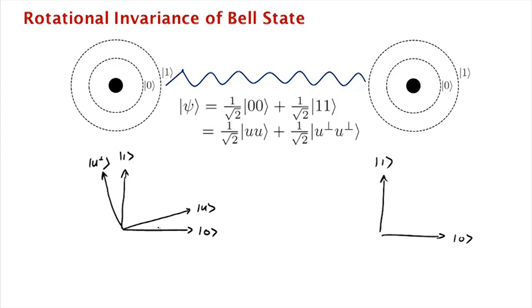It's orthogonal to u. So we just take this 0, 1 basis and we rotate it by some angle theta. And similarly, we could look at the u, u perp basis for the second qubit.